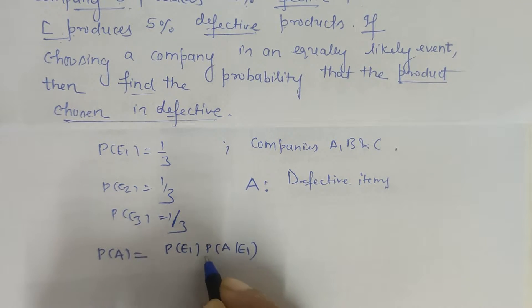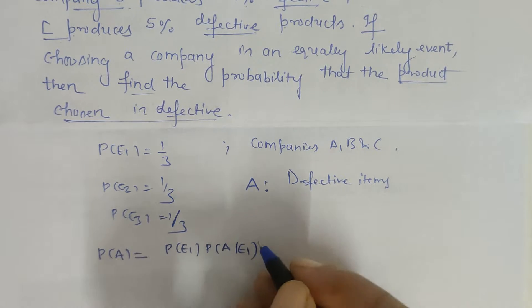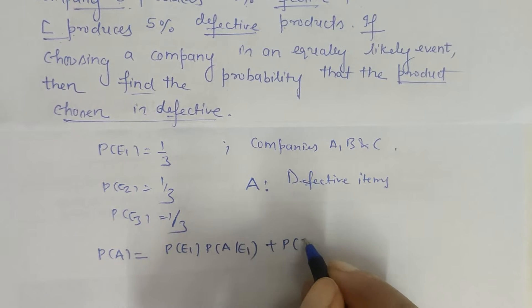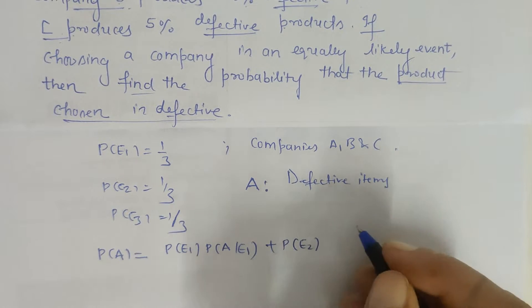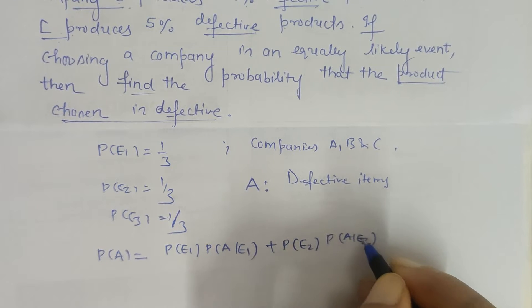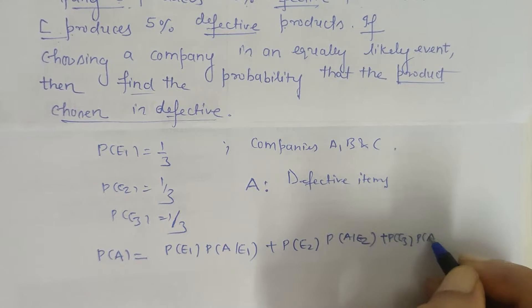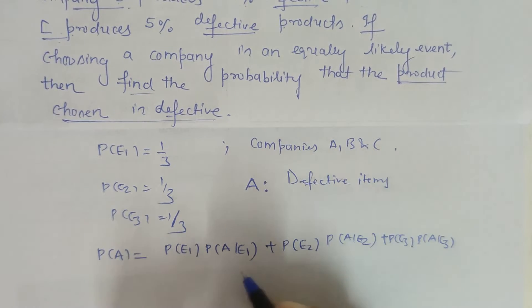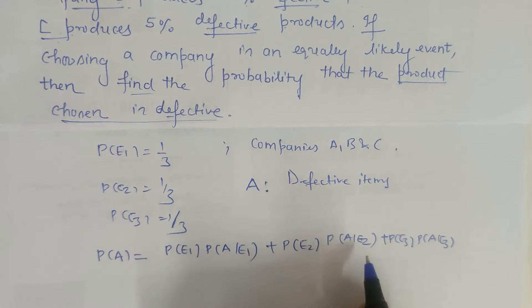What does it mean? It means the probability of a defective item under the condition that it is produced by company A, plus the possibility that company 2 is selected times probability of A given E2, the defective items produced by the second company, plus probability of E3 times probability of A given E3. Whatever disjoint events you have, all those connections and possibilities are to be written.